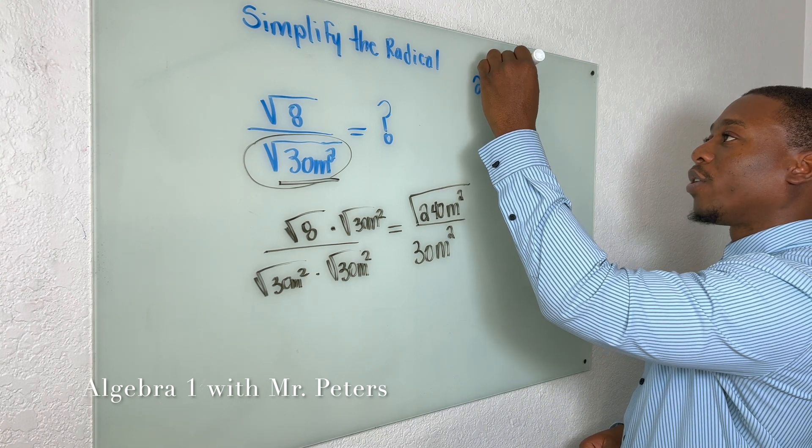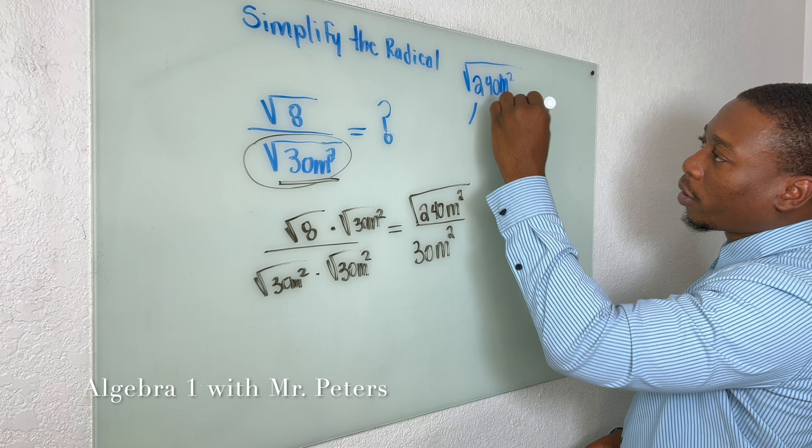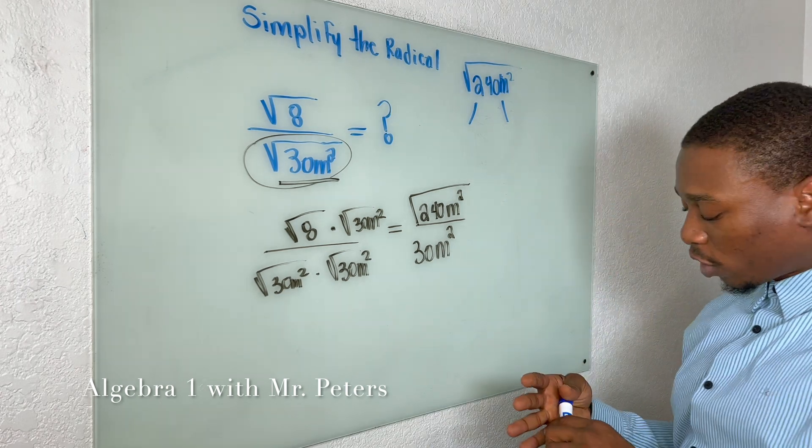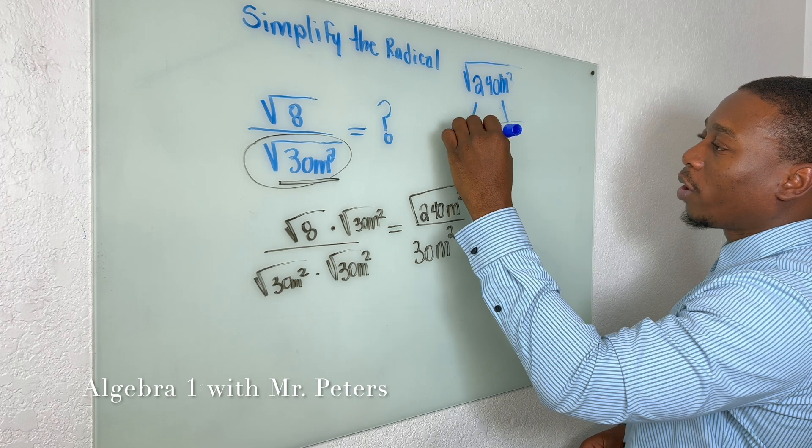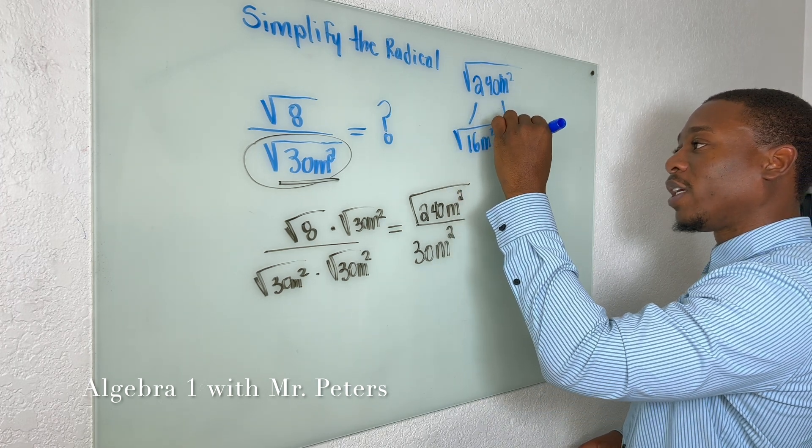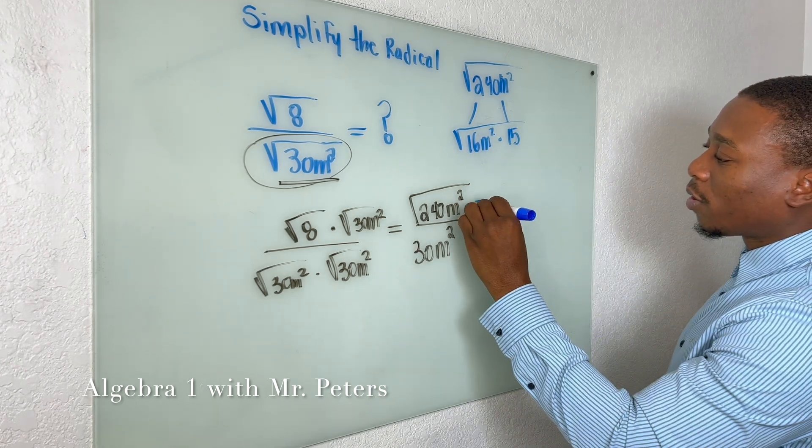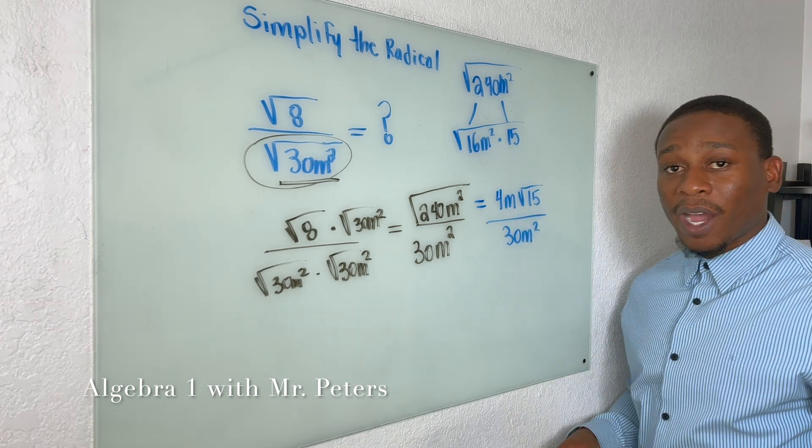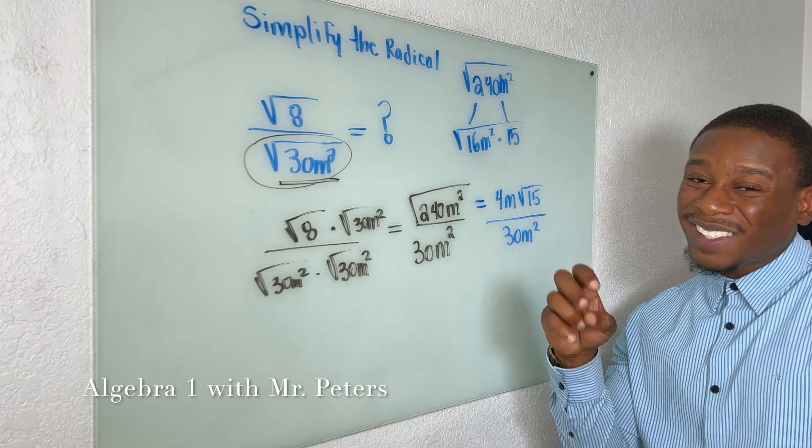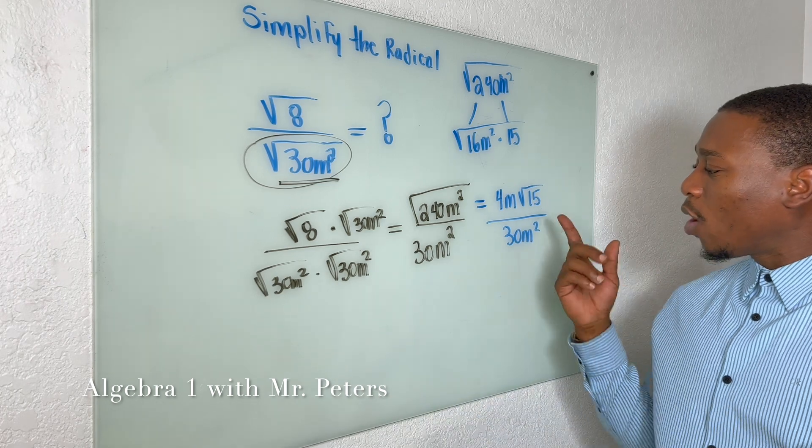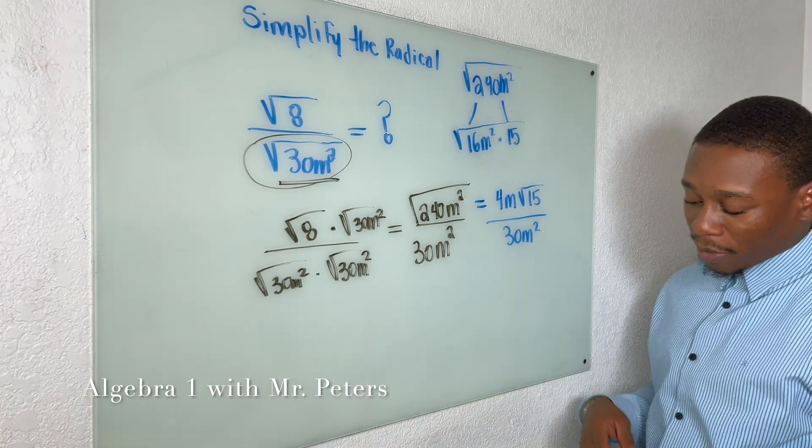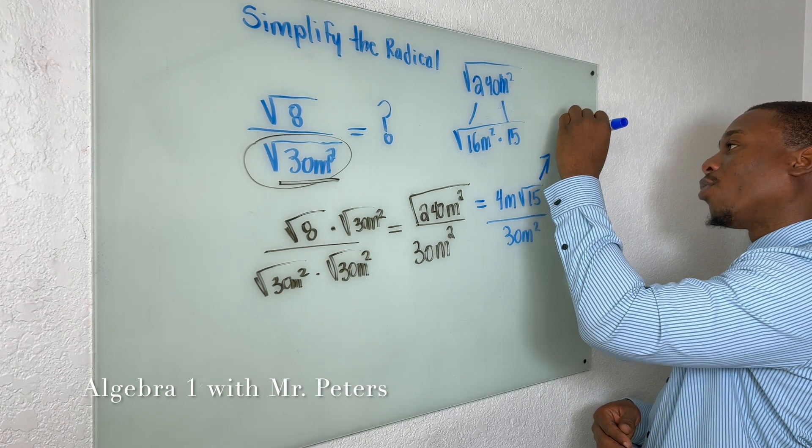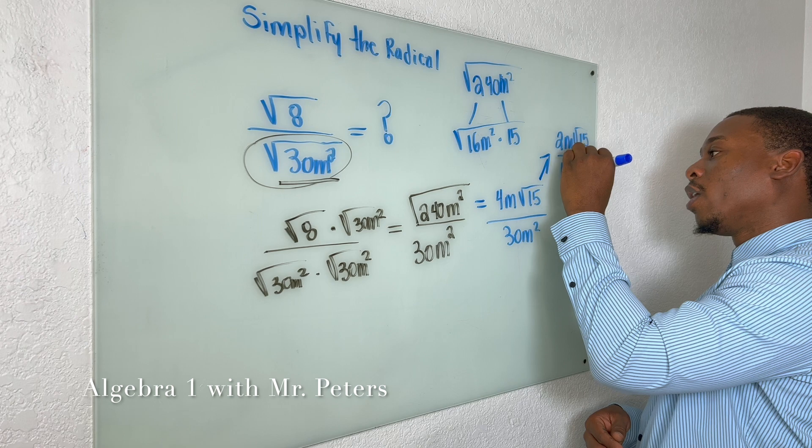So let's not forget this, I'm sorry guys. So once we break this down now, this is what we are going to get. When we have variables, I always tell students, hey, keep your variable, the exponent, the even exponent, which is a perfect square. So what does that mean? When we break this down, we're going to have √(16M² × 15). Now, when we break it down, this turns into 4M√15 all over 30M².